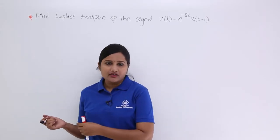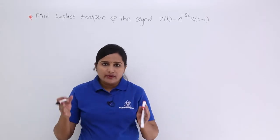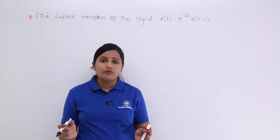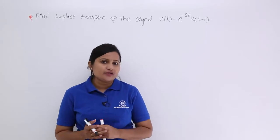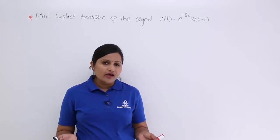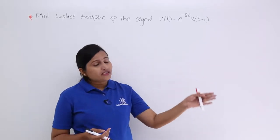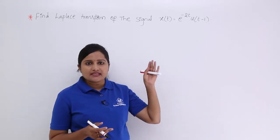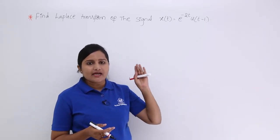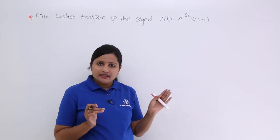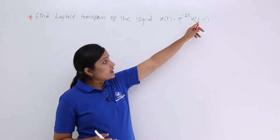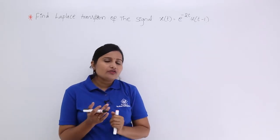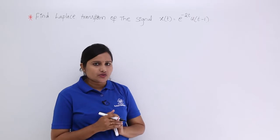In the last class I gave so many Laplace transform pairs covering many combinations of exponentials and unit steps — such as e^(-at)u(t), e^(+at)u(t), e^(+at)u(-t), e^(-at)u(-t), and so on. But here you are having a shifting of the unit step function, so the direct formula does not directly apply.